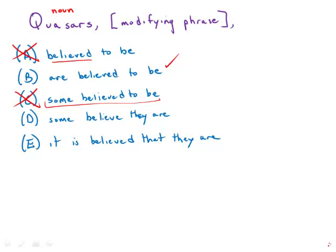D and E take a different tact. D and E have a new noun and verb. So quasars, some believe they are. That's grammatically incorrect. We can't just have a noun sitting there by itself and then followed by noun verb. So that doesn't work.